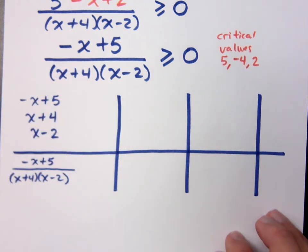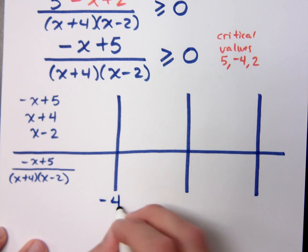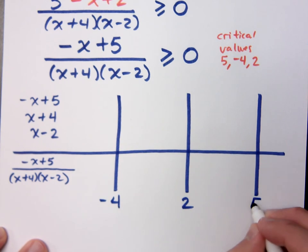We've got to figure out where these guys are so we can put these in the right order. So what are those critical values here? This guy would give me a positive 5. This is negative 4, and this guy is positive 2. So when we put these guys in order, we have negative 4, then 2, then 5. Do you all agree?